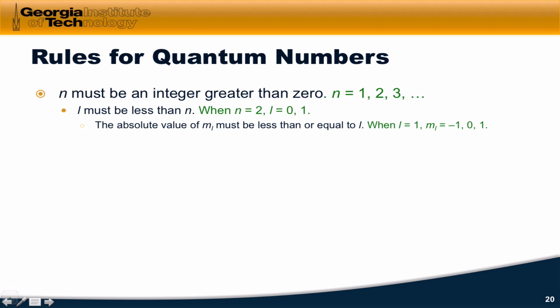As we've seen, n must be an integer greater than zero. One, two, three, et cetera. One thing I want to impress on you is that this goes on to positive infinity. So n can take on any positive integer value. But,